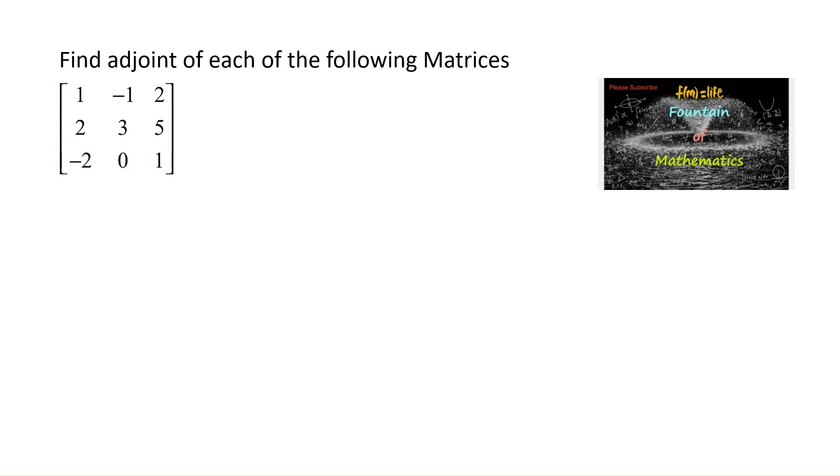Find the adjoint of matrix A, which is equal to [1, -1, 2; 2, 3, 5; -2, 0, 1].